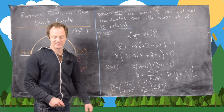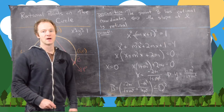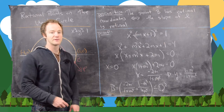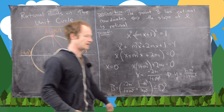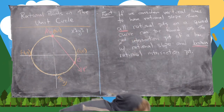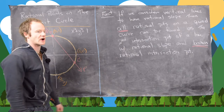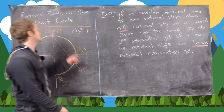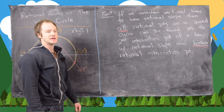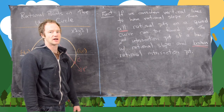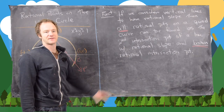This strategy we just used to describe the rational points on the unit circle can in fact be used to describe the rational points on any quadratic curve. I'll state a much more general result — we won't fully prove it, but we'll sketch what the proof involves.